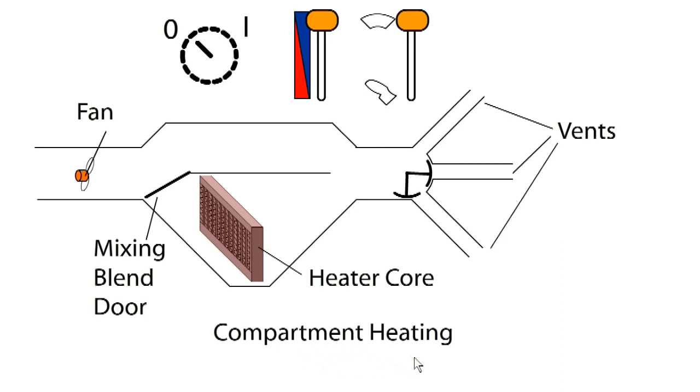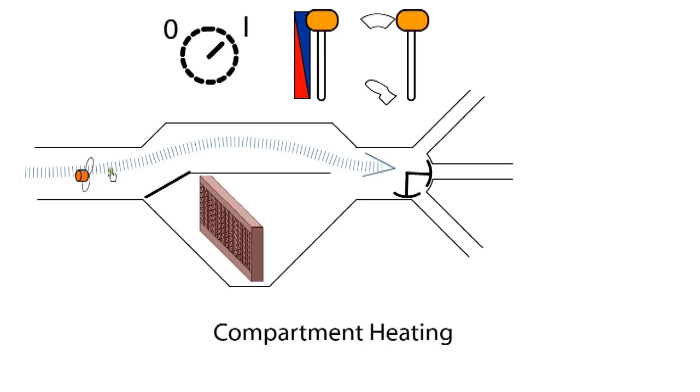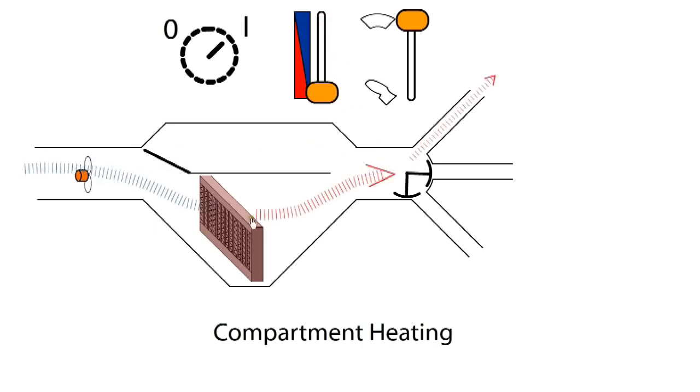For the interior heating system, coolant flows to the heater core located under the dashboard of the car. An electric fan assists with the movement of air, while a blend door is used to direct flow through the heater core when required.